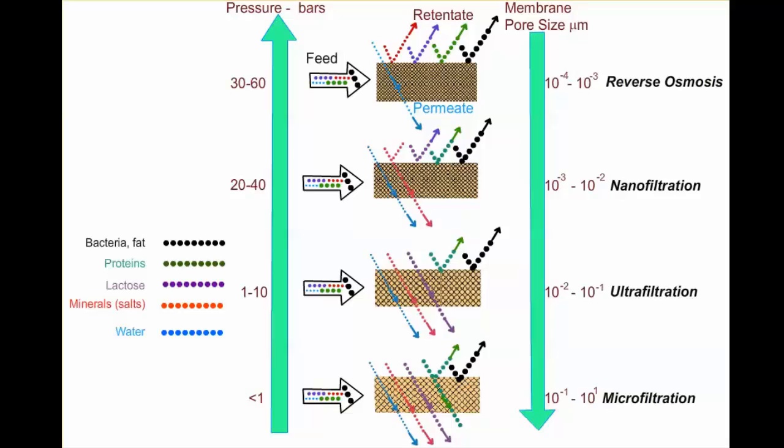Now let's consider the four most commonly used membrane systems in the food industry: microfiltration, ultrafiltration, nanofiltration, and reverse osmosis. These systems are differentiated based on membrane pore size.